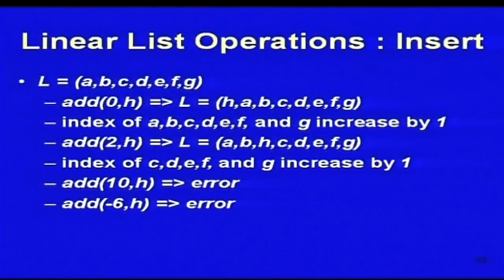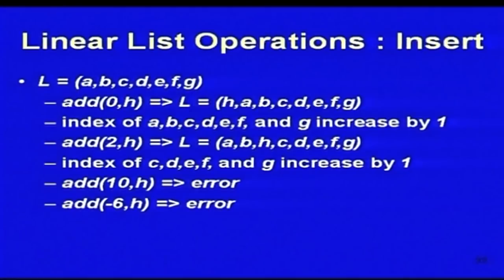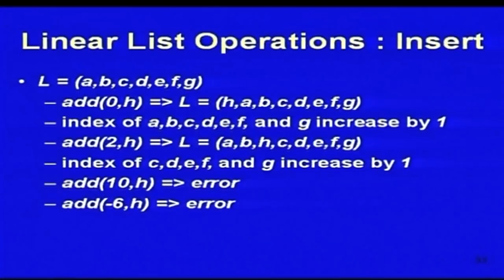For example, suppose you have list [a, b, c, d, e, f, g]. If you call add(0, h) — where 0 is the index and h is the element — the result is [h, a, b, c, d, e, f, g]. Note that the indices of a through g have each increased by 1. Before the add, the index of 'a' was 0; after, it is 1. If you call add(2, h) instead, only elements from index 2 onward (c, d, e, f, g) are shifted. If you give add(10, h) where 10 is out of range, or add(-6, h) with a negative index, you will get an error.